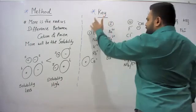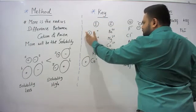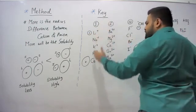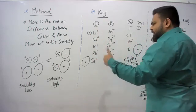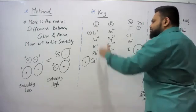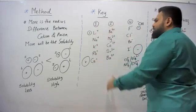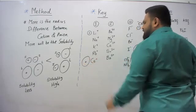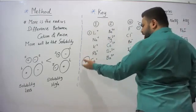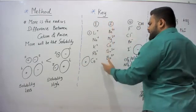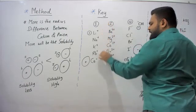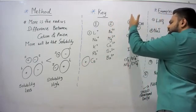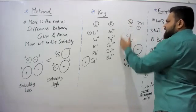For Group 1 cations going down the group: lithium⁺ is the smallest, because it has the fewest shells. As you go down the group, due to the increment of the principal quantum number, the ionic radius increases. Lithium⁺ has the smallest ionic radius while caesium⁺ has the largest among Group 1. In Group 2, beryllium²⁺ is the smallest while barium²⁺ has the largest cationic radius.